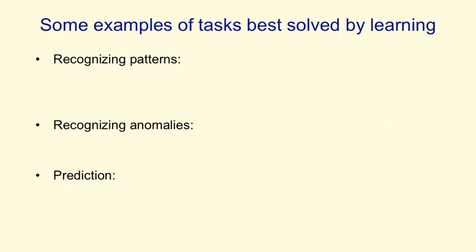Some examples of the things that are best done by using a learning algorithm are recognizing patterns — for example, objects in real scenes, or the identities or expressions of people's faces, or spoken words.